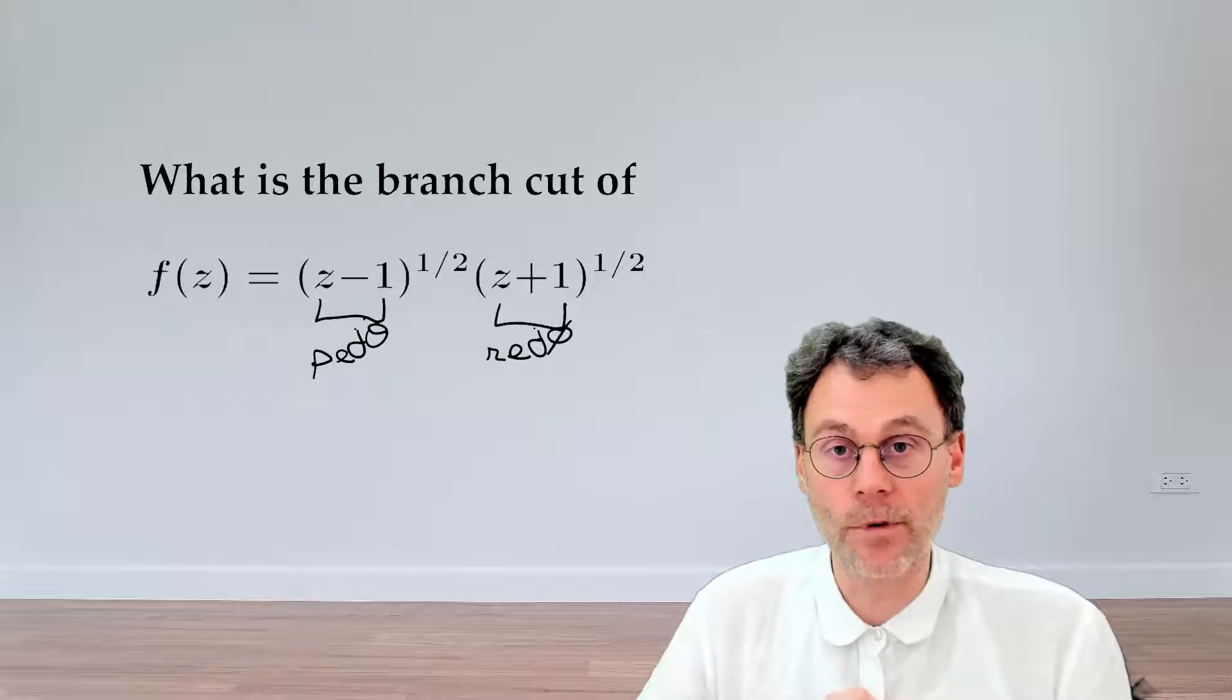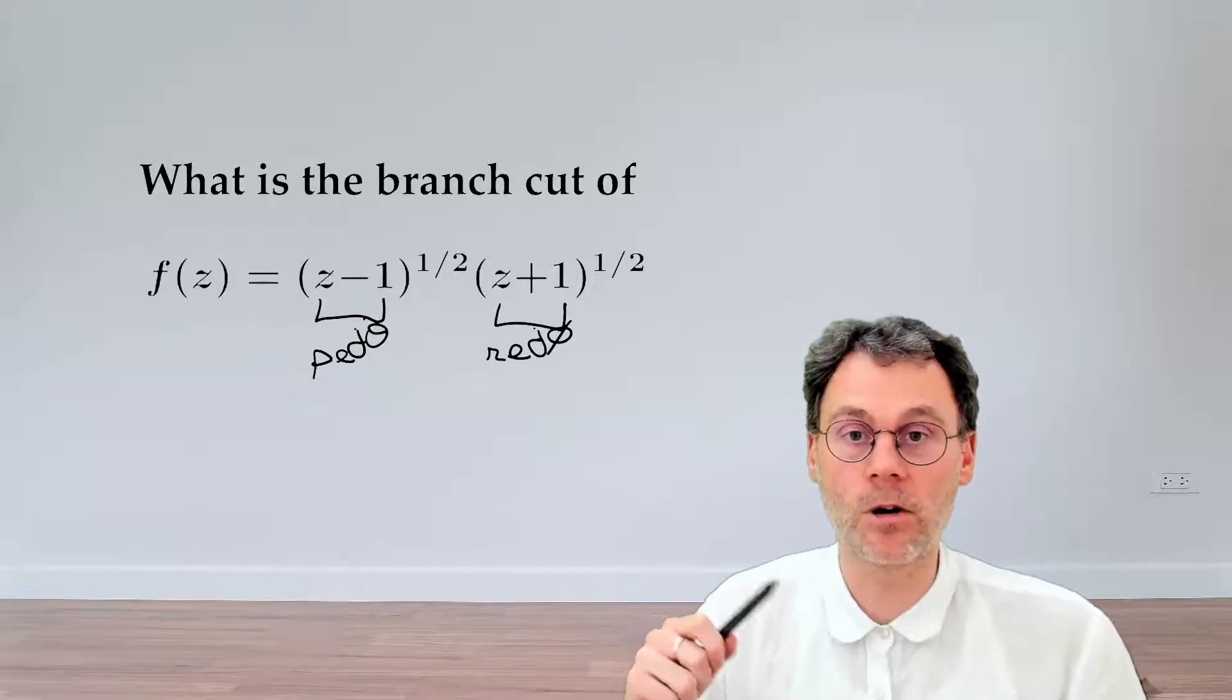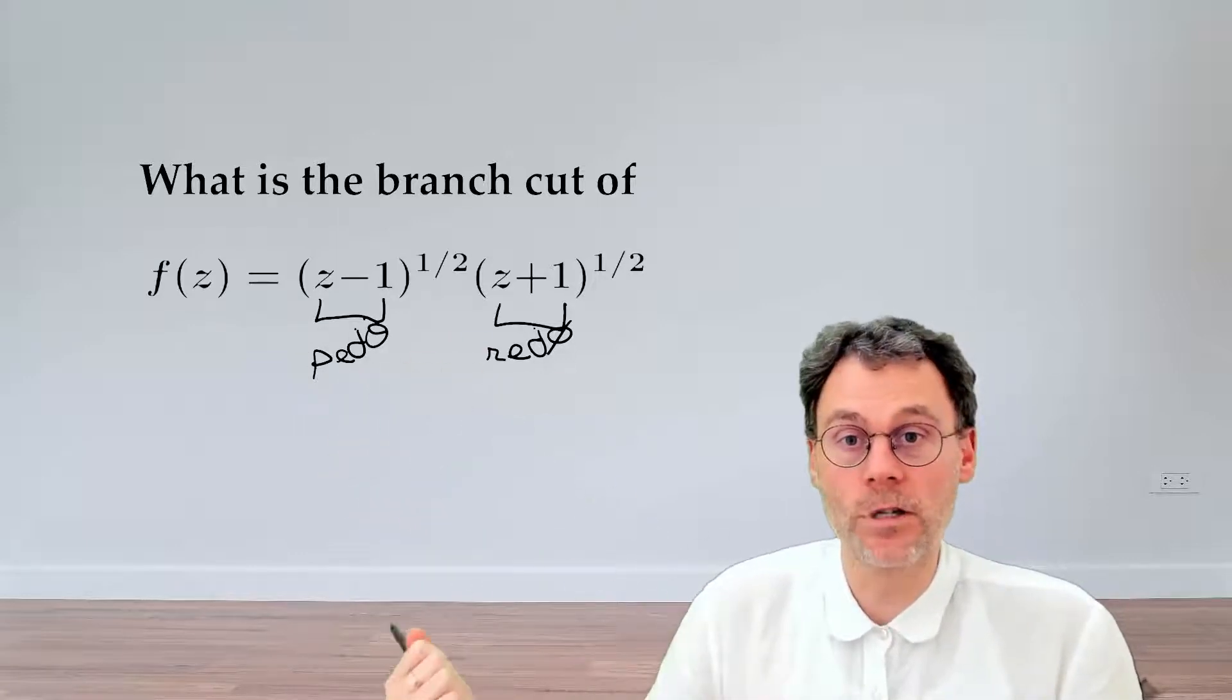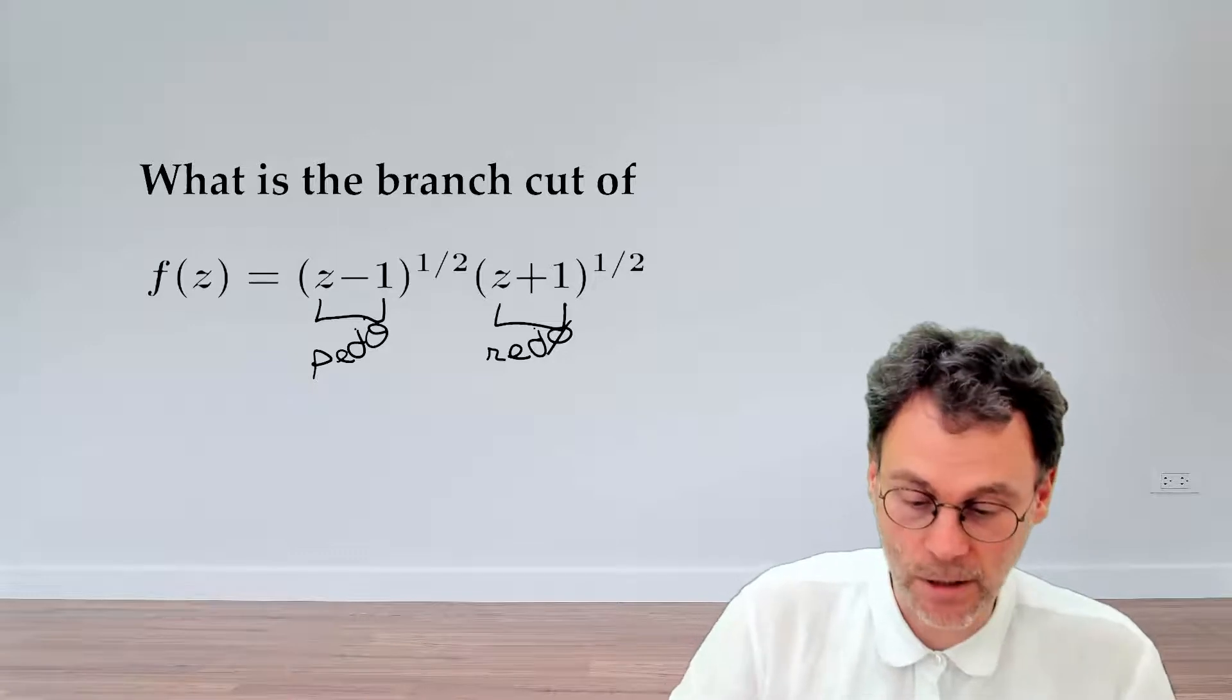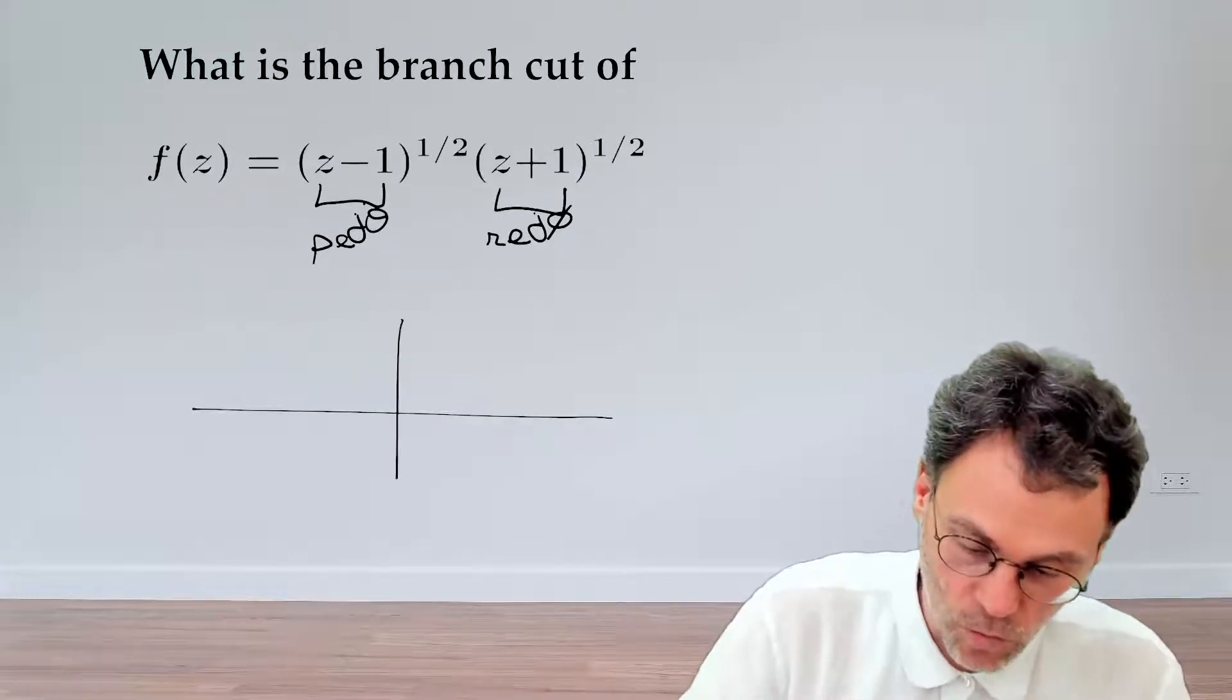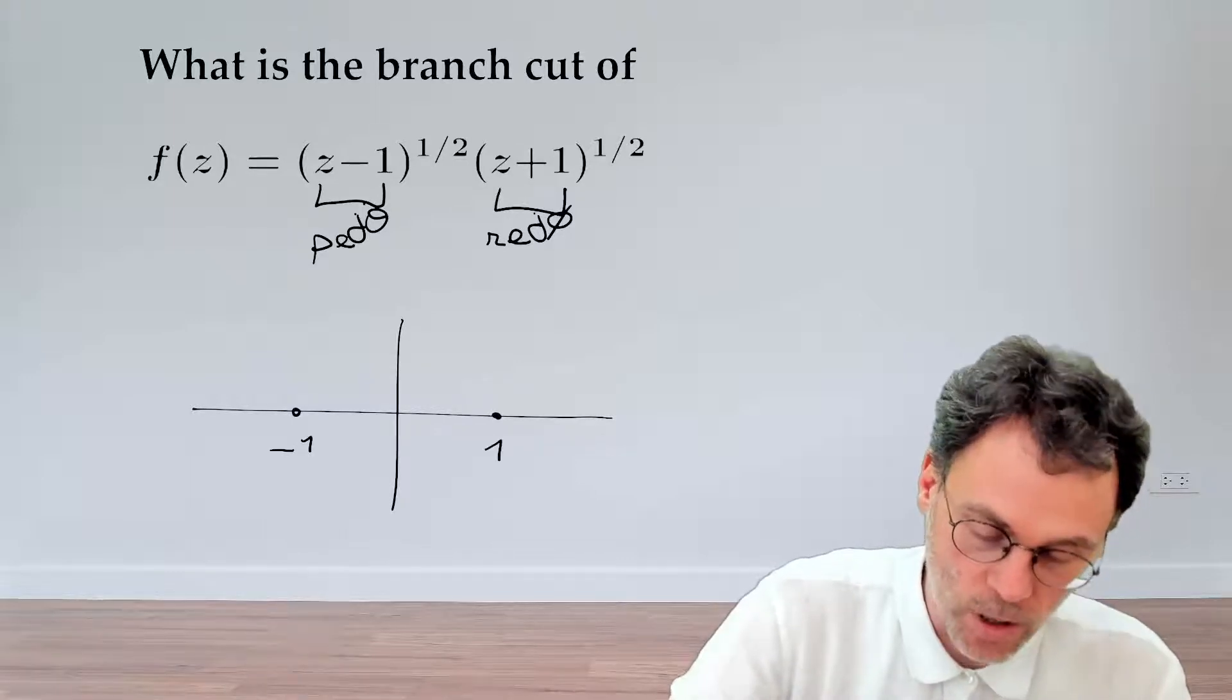Now what will happen in this particular situation? When do we have that the arguments of our two square roots here become 0, so that the sign doesn't matter? That's obviously going to happen at the points minus 1 and plus 1. So each of these factors will contribute one branch point, one over here, and one over there.